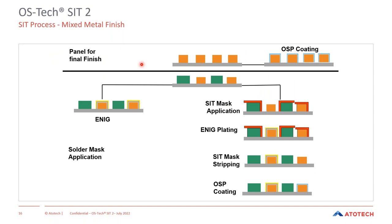Looking at the SIT process in more detail: why do we need a specific OSP for SIT processing? The standard OSP process would simply cover all copper pads with OSP. In an ENIG process, copper pads are plated with ENIG. But in the SIT process, the pads that shall not be plated with ENIG are covered with a protection mask, the ENIG plating is done, and then the SIT mask is removed.